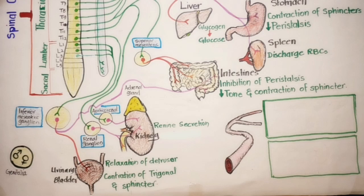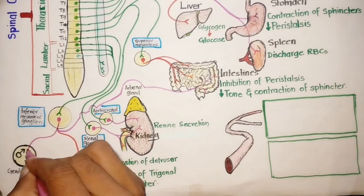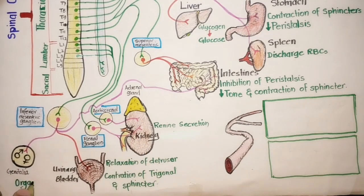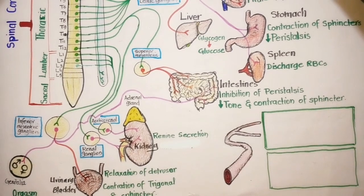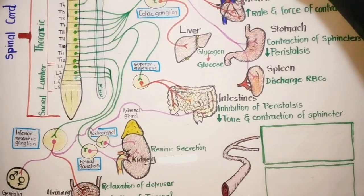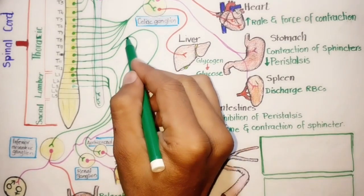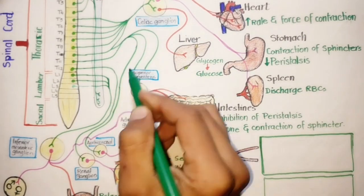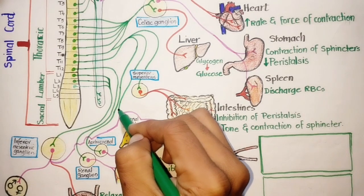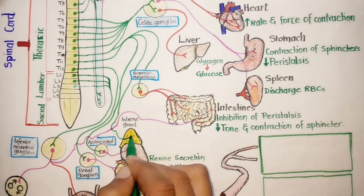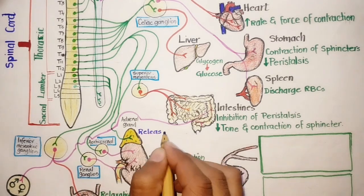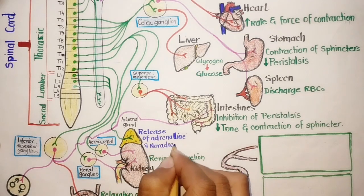Nerve impulses from the inferior mesenteric ganglion innervate the urinary bladder, resulting in relaxation of detrusor muscles and contraction of the trigonal muscle and sphincter muscles. Other postganglionic fibers from the inferior mesenteric ganglia innervate the genitalia and lead to orgasm. Notably, the adrenal gland is an exception: a single neuron arising from the lumbar region innervates the adrenal gland directly without a synapse, stimulating the release of adrenaline and noradrenaline into the blood.